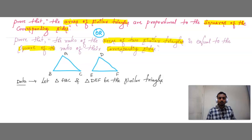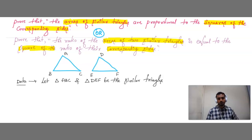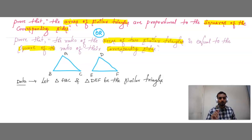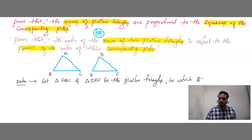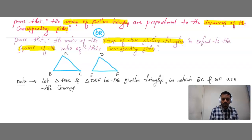In these triangles, if we take AB, the corresponding side is DE. If we take AC, we take DF. If we take BC, we take EF. You can take any one pair of corresponding sides. To solve this theorem, I am taking BC and EF as the corresponding sides.